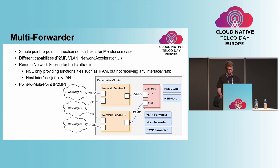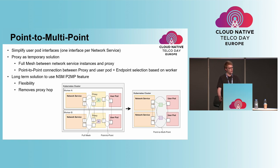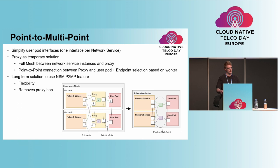The second forwarder is the point-to-multipoint. It is required to avoid exposing the full mesh connection and to provide a single network interface per network service to the user pods. Traffic is attracted from external gateways by several instances of the same network service, and the traffic can travel through any of the network service instances before it reaches the user pod. Therefore, the user pod has to be connected to all available network service instances, forming a full mesh. As a temporary solution, we are using a proxy: the full mesh connection is created between the proxies and the network service instances, and point-to-point connections are created between the proxies and the user pods. The long-term solution is to use the point-to-multipoint forwarder, with bases already in place in NSM, to be developed in collaboration with the NSM community.